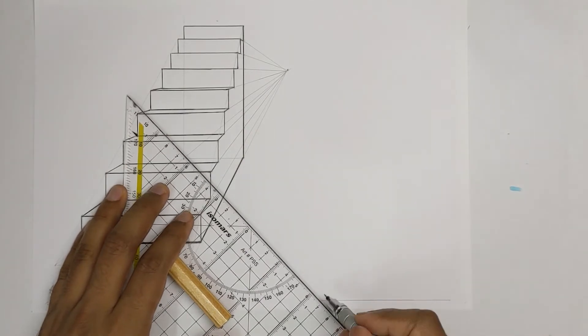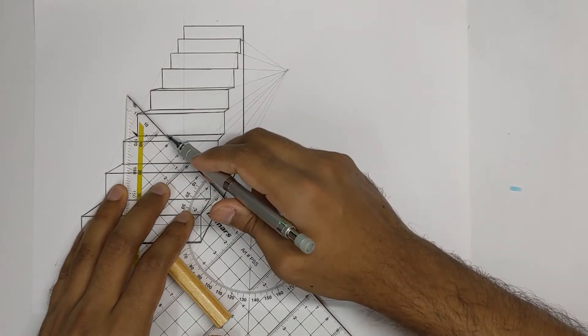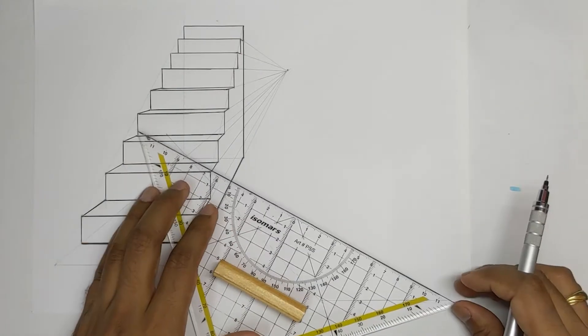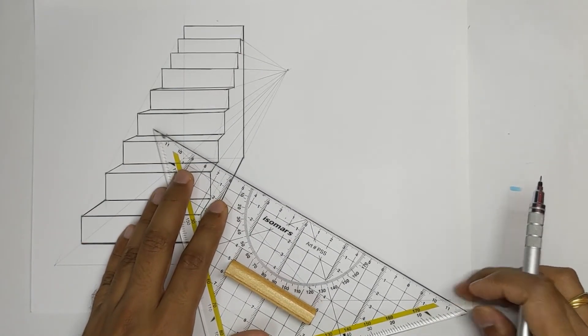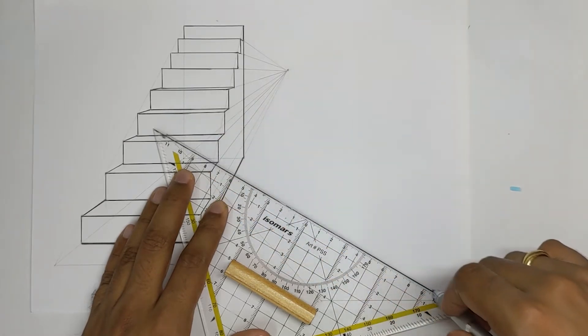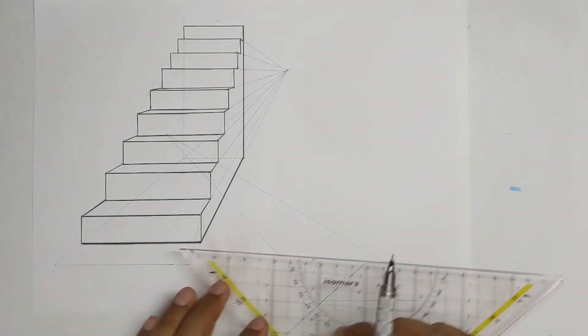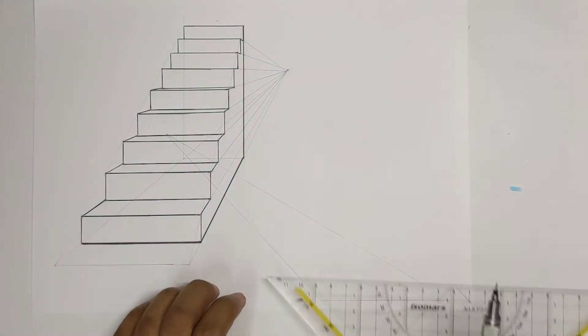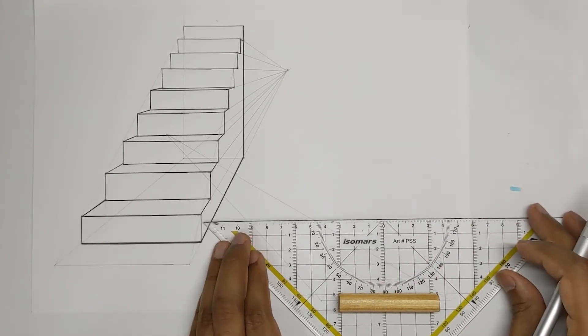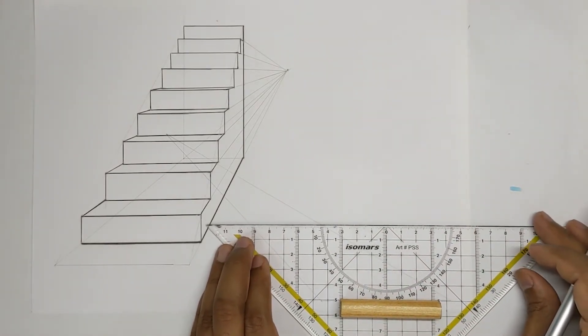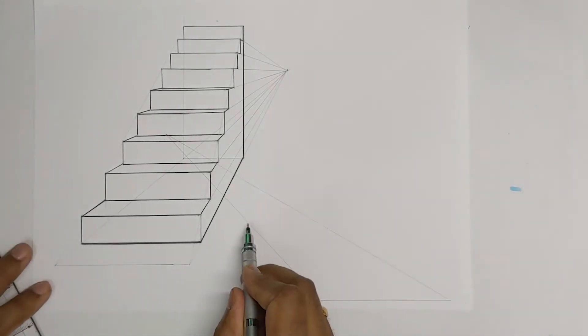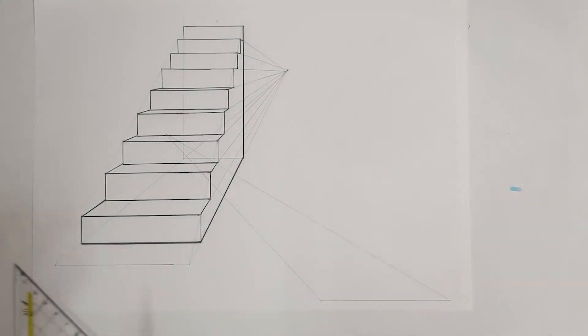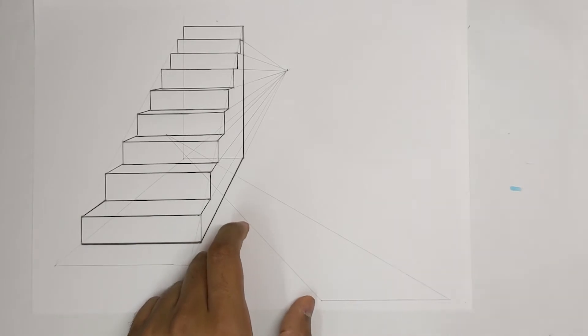So as usual just go ahead and connect the lines to define our ground plane, and we are going to decide that our stairs should be this wide here. So this is the maximum width of our stairs.